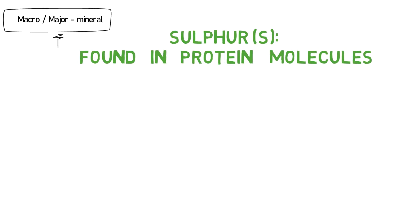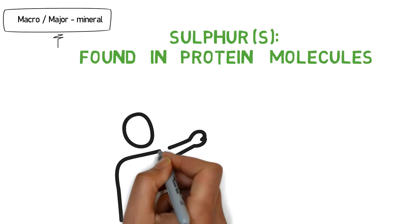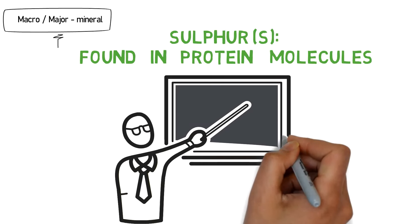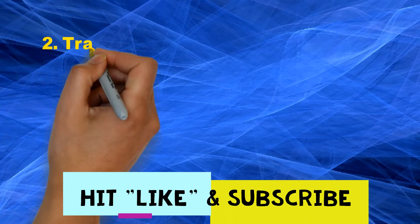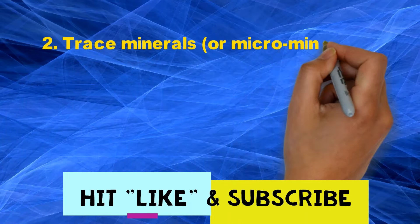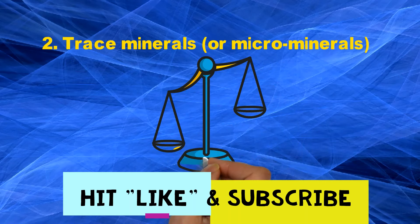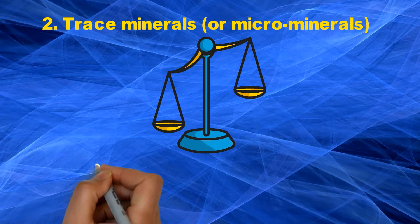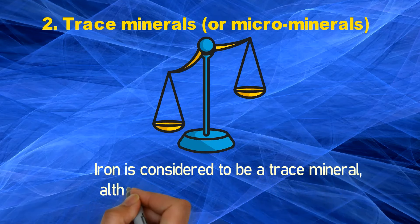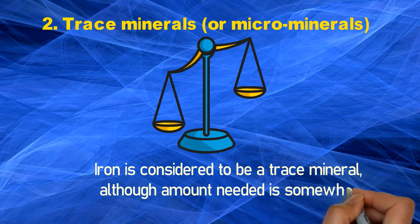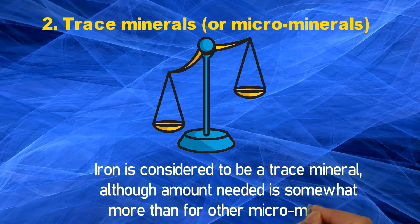Please comment if you want a separate detailed video on any of these minerals. Second category: trace minerals or micro-minerals. The body needs trace minerals in very small amounts. Note that iron is considered to be a trace mineral, although the amount needed is somewhat more than for other micro-minerals.